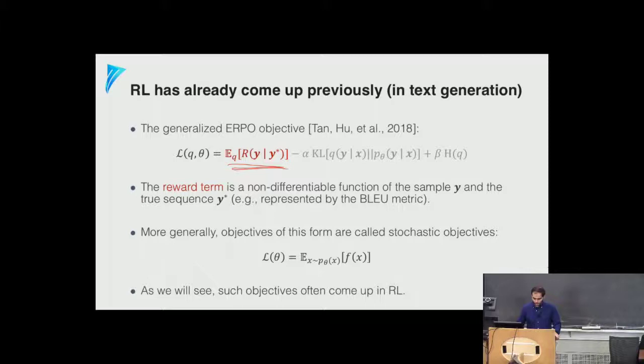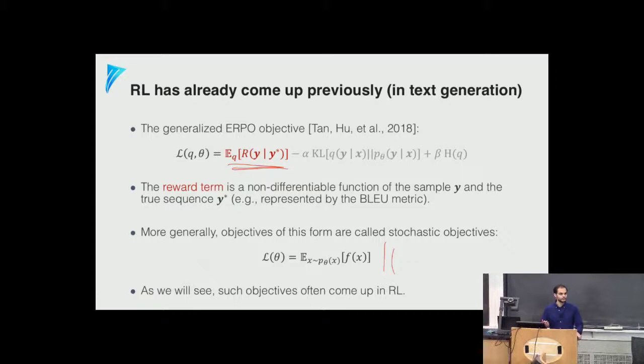This optimization problem is pretty common in RL. In the more general form, we have some black-box function of the output of our distribution that generates samples. The only thing we can do is evaluate this function and get a scalar value. We cannot directly associate the function's output with the parameters of the generating distribution, so we need to find a way to optimize it.